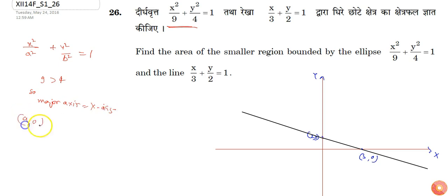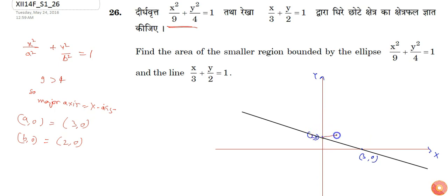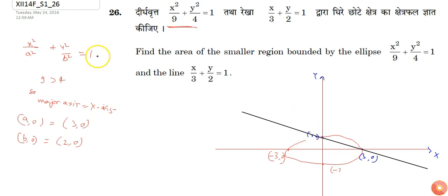So (a, 0) will be (3, 0) and the point on the y-axis will be (0, 2), since a squared is 9 and b squared is 4. The ellipse will be drawn accordingly, with vertices at minus 3 on the x-axis and 0, 2 on the y-axis.